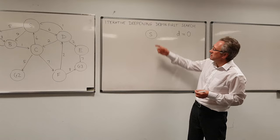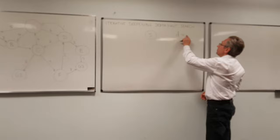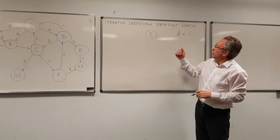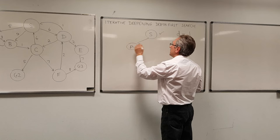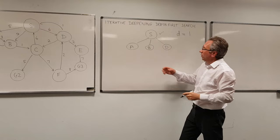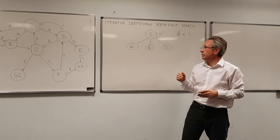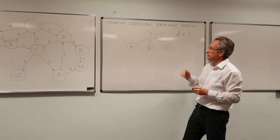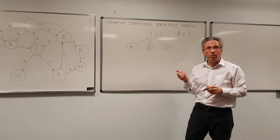So we now increase the depth limit by one and we run depth first search again. We ask, is that the goal state? No, it's not. So I expand it and I can go to states A, B and D. All of these states are at the depth limit. So therefore all I can actually do is to say, are you the goal state? No. Are you the goal state? No. Are you the goal state? No. And I'm finished. At this point the algorithm stops and says I didn't find a goal with depth equal one.